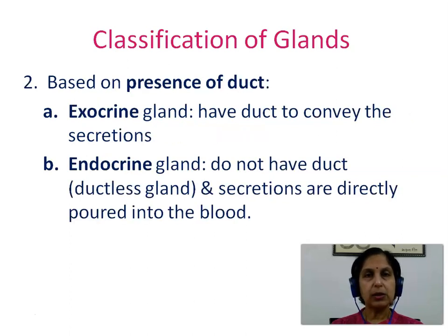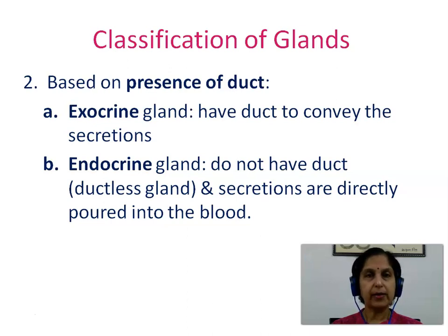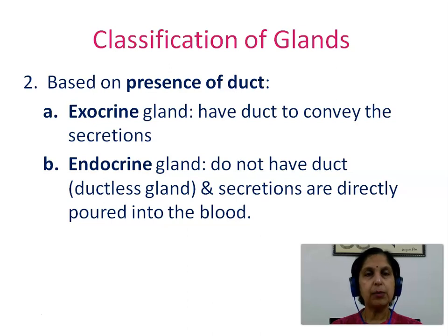Based on the presence of a duct, glands can be classified as exocrine glands and endocrine glands. Exocrine glands have a duct to convey the secretions, while endocrine glands do not have a duct. These are ductless glands and secrete their secretions directly into the bloodstream.